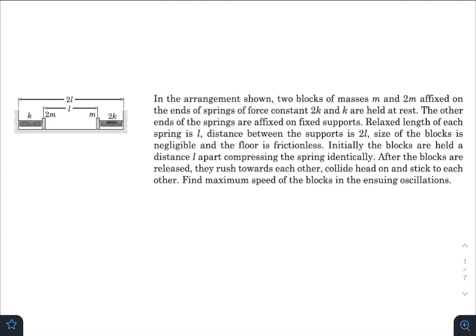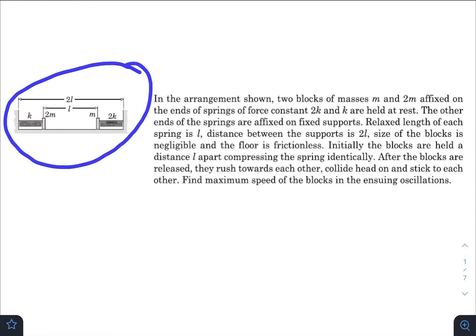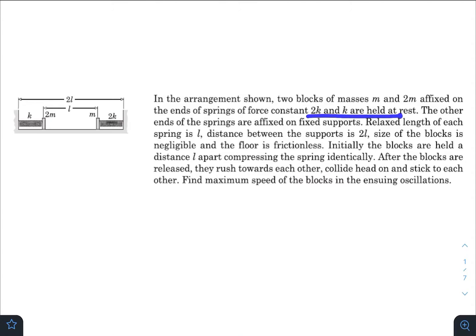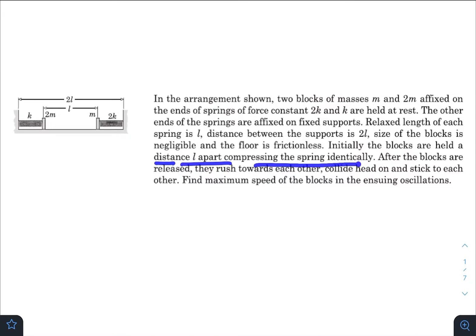In today's question, in the arrangement shown, two blocks of masses m and 2m are fixed on the ends of springs of force constants 2k and k. As shown in the left diagram, they are held at rest; the other ends of the springs are fixed on fixed supports. The relaxed length of each spring is l, the distance between the supports is 2l, and the size of the blocks is negligible. The floor is frictionless. Initially the blocks are held a distance l apart, compressing the springs identically. After the blocks are released they rush towards each other, collide head-on, and stick together. Find the maximum speed of the blocks in the ensuing oscillations.